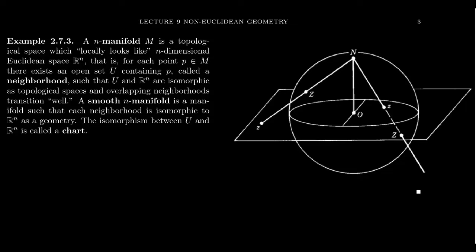How do you find the curvature of the earth when you don't have the technology to blast a rocket into space and take a picture from the moon? We have to do it while we're still inside the geometry. So what are these charts when you think of the sphere as a smooth manifold? I claim it's a smooth manifold because the geometry of a neighborhood is actually isomorphic to the geometry of R2. So we have this two-dimensional smooth manifold.